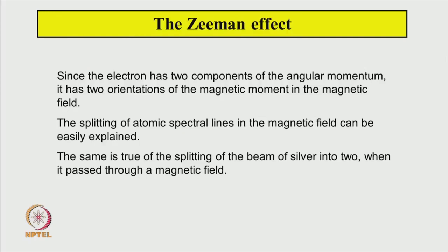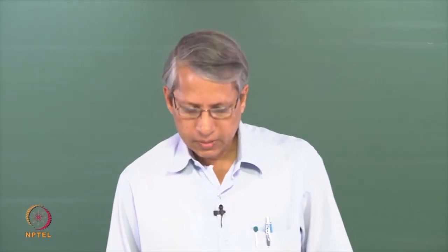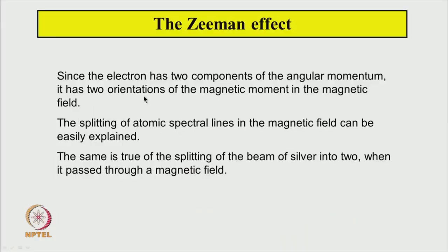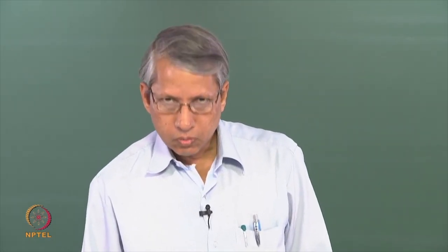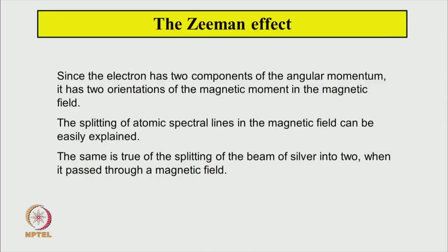The Zeeman effect — the splitting of spectral lines in the presence of a magnetic field — can also be very easily explained by the two possible orientations of the magnetic moment in the magnetic field. The same is true in the case of the Stern-Gerlach experiment, where the silver atom beam splits into 2. Its origin is again that spin angular momentum takes two values, plus half and minus half, giving two components of magnetic moment, causing the beam to split into two.